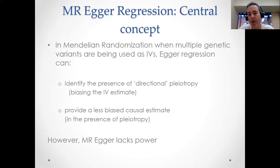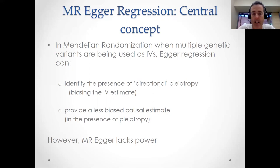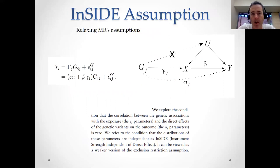MR Egger regression is useful from the perspective of identifying directional pleiotropy in your dataset. It also provides a less biased estimate of the causal effect in the presence of pleiotropy. The disadvantage, though, is that MR Egger lacks power.